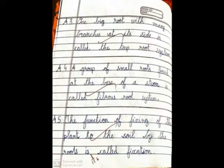Question four: What is a fibrous root system? A group of small roots found at the base of a stem is called the fibrous root system.